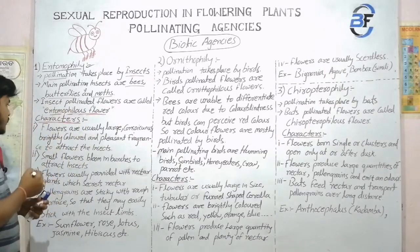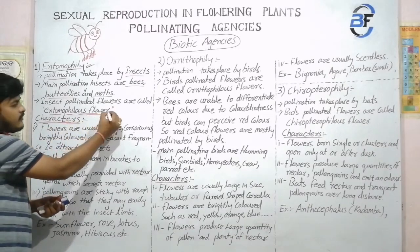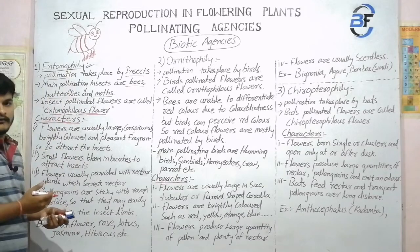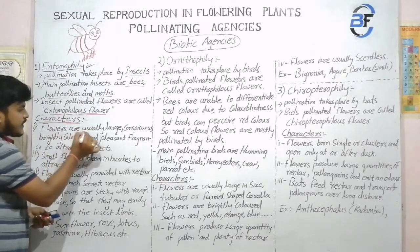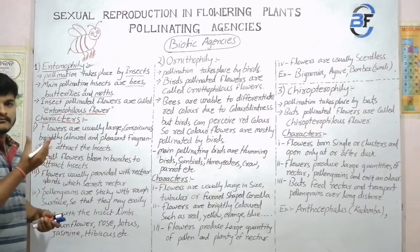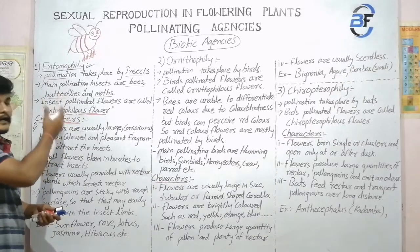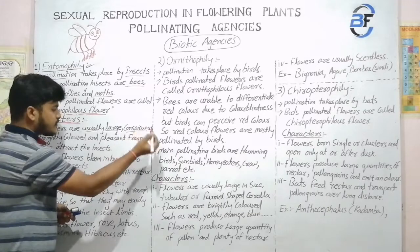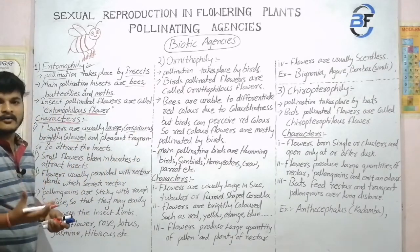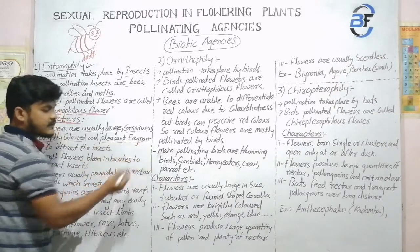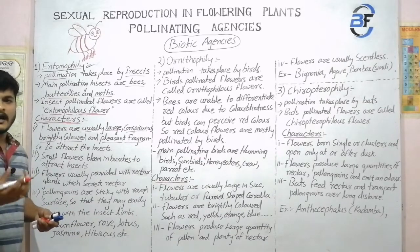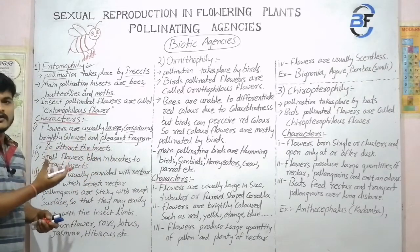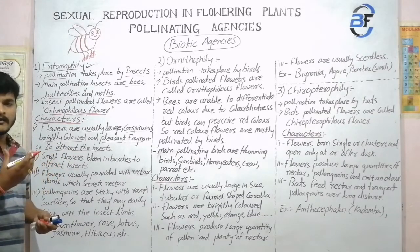The characteristics of Entomophilous flowers: the first one is flowers are usually large in size. The flowers included in your Entomophily technique are usually large — the size of the flower is usually large. They are conspicuous and bright colored, that means bright and gorgeous in nature. They have a pleasant fragrance — the flowers have good fragrance to attract insects towards them.